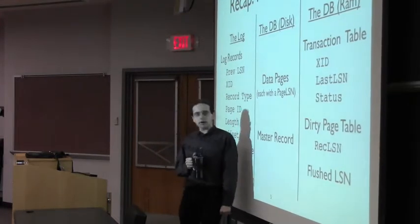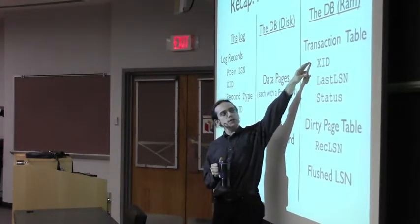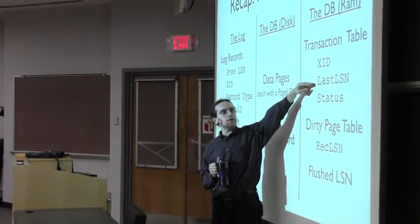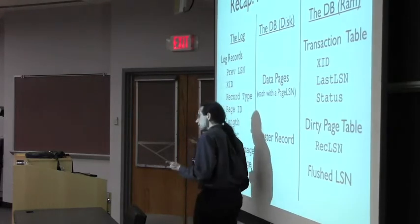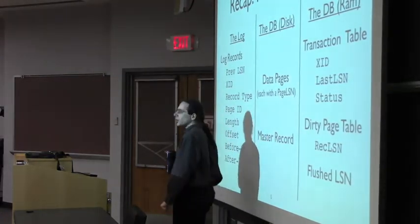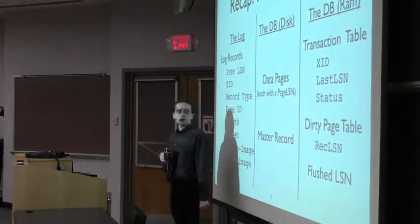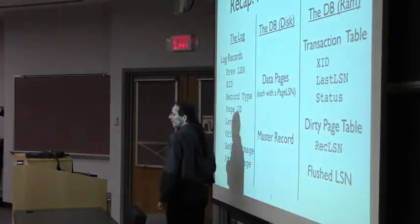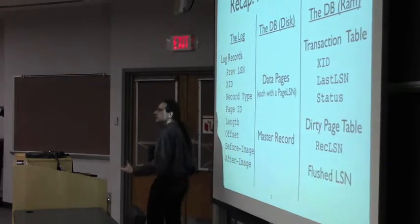There's also the master record, which we'll talk about in a moment. The database in RAM keeps track of all active transactions — including a transaction ID, the last log entry the transaction wrote, and a status: committed, aborted, or still running. We also keep track of all dirty pages, and for each dirty page, we keep track of the last log entry that made a change to it. Finally, we keep track of the last log entry to make it to disk, so every log entry with a lower sequence number is guaranteed to have been flushed.